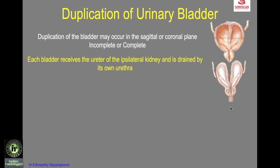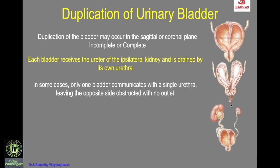With complete duplication, each bladder receives the ureter of the ipsilateral kidney and is drained by its own urethra. In some cases, only one bladder communicates with the single urethra, leaving the opposite side obstructed with no outlet. Here the right bladder is drained via the urethra, but the left bladder is obstructed, resulting in atrophy of the kidney.